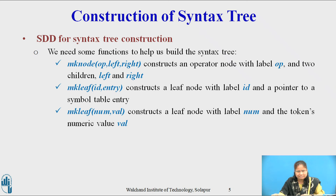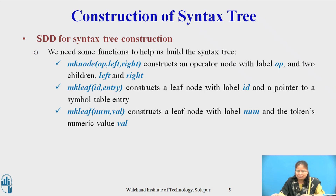Each node in a syntax tree can be implemented as a record with several fields. We use the following functions to create the nodes of the syntax tree for expressions with binary operators. Each function returns a pointer to a newly created node. The first function is makenode(op, left, right), which constructs an operator node with the label op and two children: left and right.